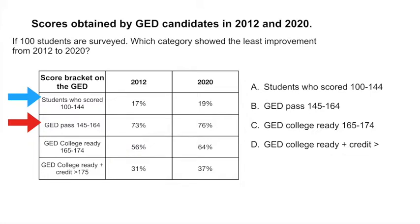We have a bracket of students who were college ready—they scored 165 to 174—and finally those students who were college ready plus credit, scoring over 175. If you look at the other two columns, these correspond to the years: 2012 and 2020, showing what percentage of students scored in each bracket.